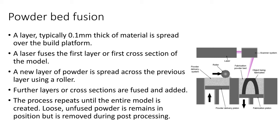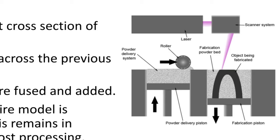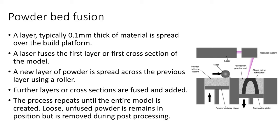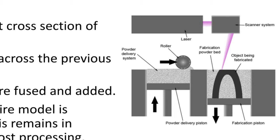The next process is powder bed fusion. A layer typically 0.1 mm thick of material is spread over the build platform using a roller. A laser then fuses the first layer, meaning only the portion of the powder corresponding to the part cross-section is fused.